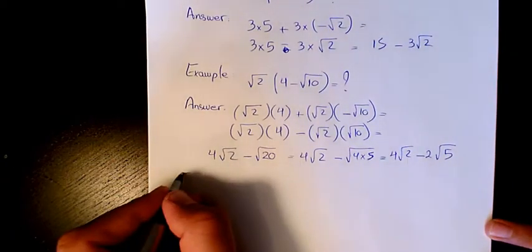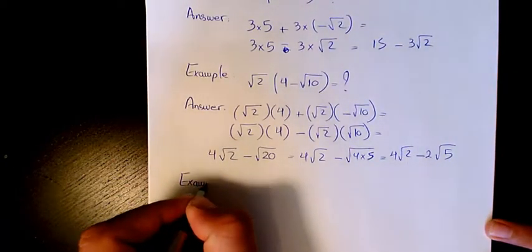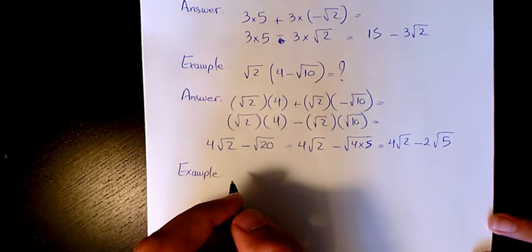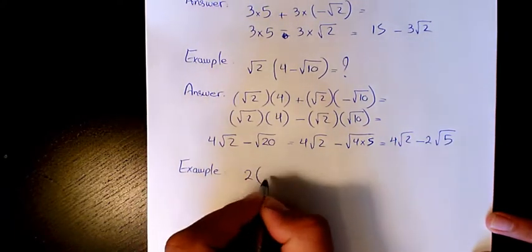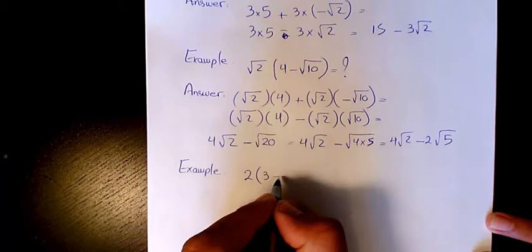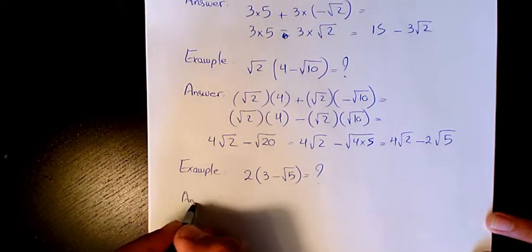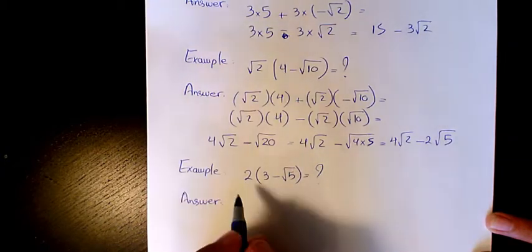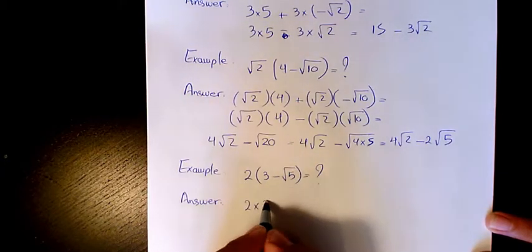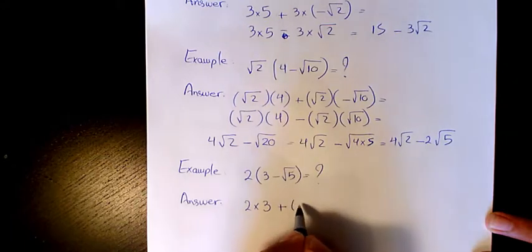Next example we have 2(3 - √5). The answer will be 2 times 3 plus 2 times negative √5.